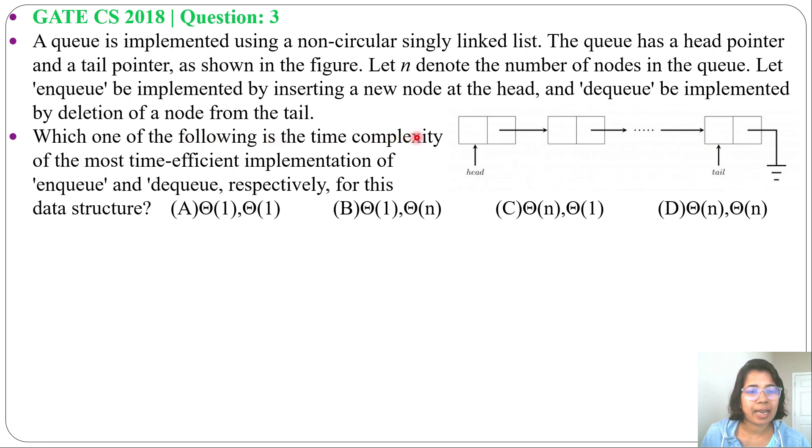Which of the following is the time complexity of the most time-efficient implementation of enqueue and dequeue respectively for this data structure? Four options are given. So for enqueue what we can do is we will create a node.